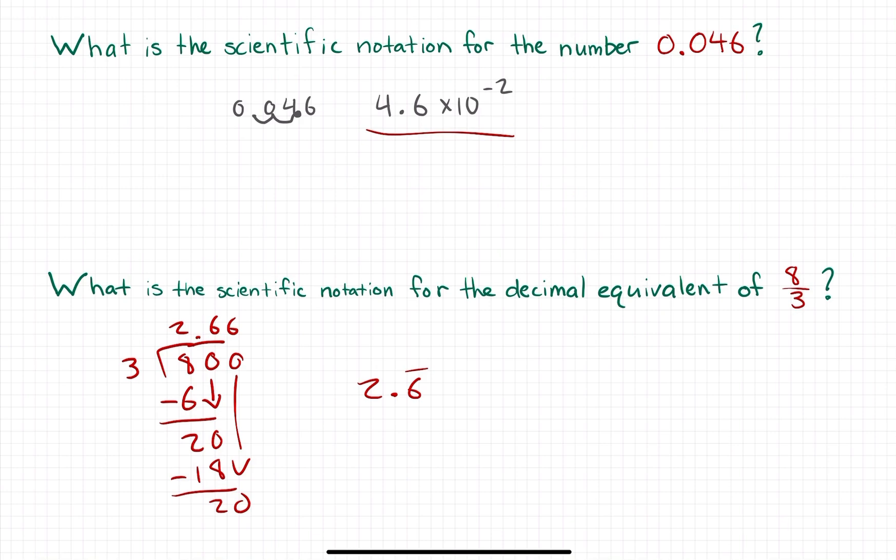This is going to be written in scientific notation as 2.6 repeating times 10 to the power of 0. Remember that 10 to the power of 0 is just equal to 1, because anything to the power of 0 is equal to 1. So what effectively I'm saying here is 2.6 repeating times 1, which doesn't change it at all.